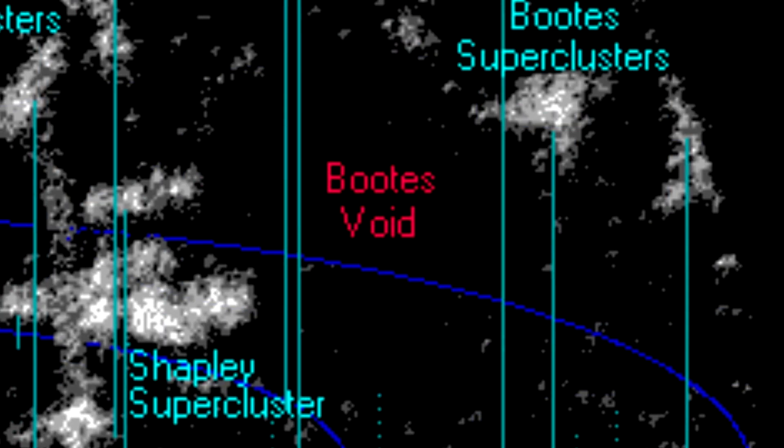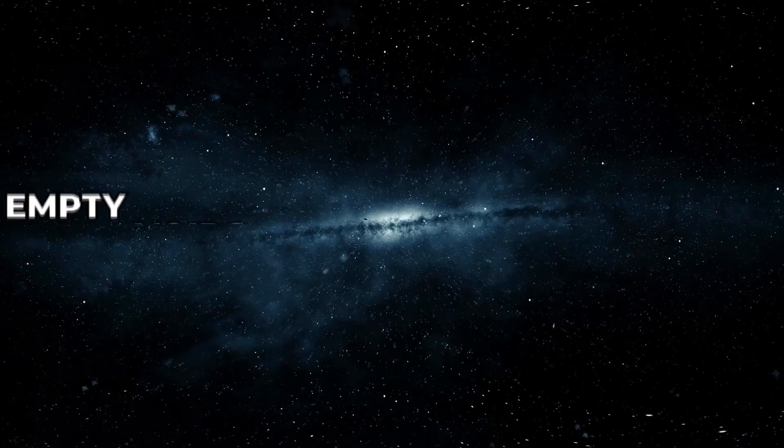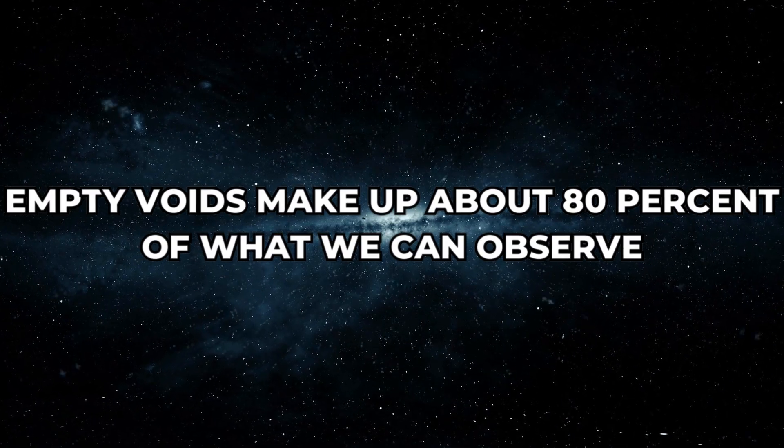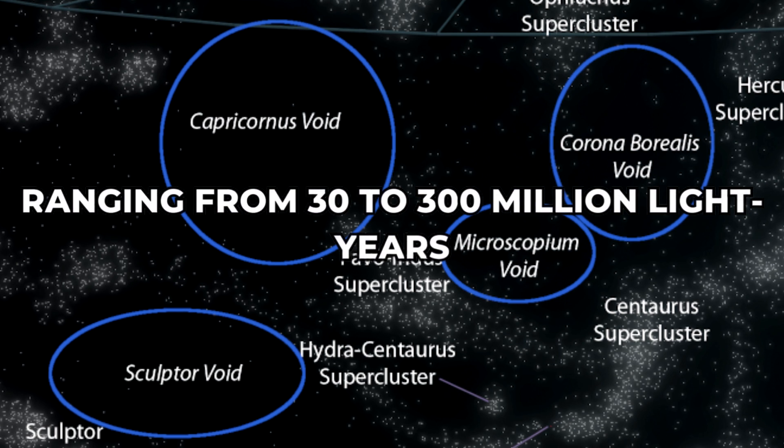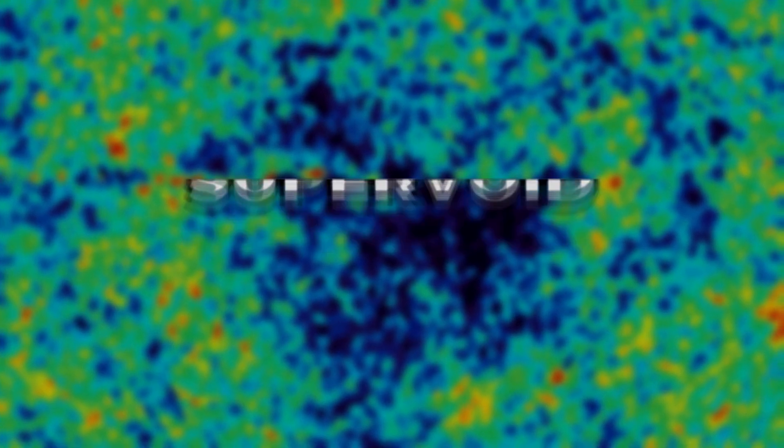Among these cosmic threads, there are vast, empty voids with hardly any galaxies. These empty voids make up about 80% of what we can observe in the universe. Most of them are quite large, ranging from 30 to 300 million light-years across. Boötes, in particular, is one of the biggest of these empty voids, giving it the title of a supervoid.